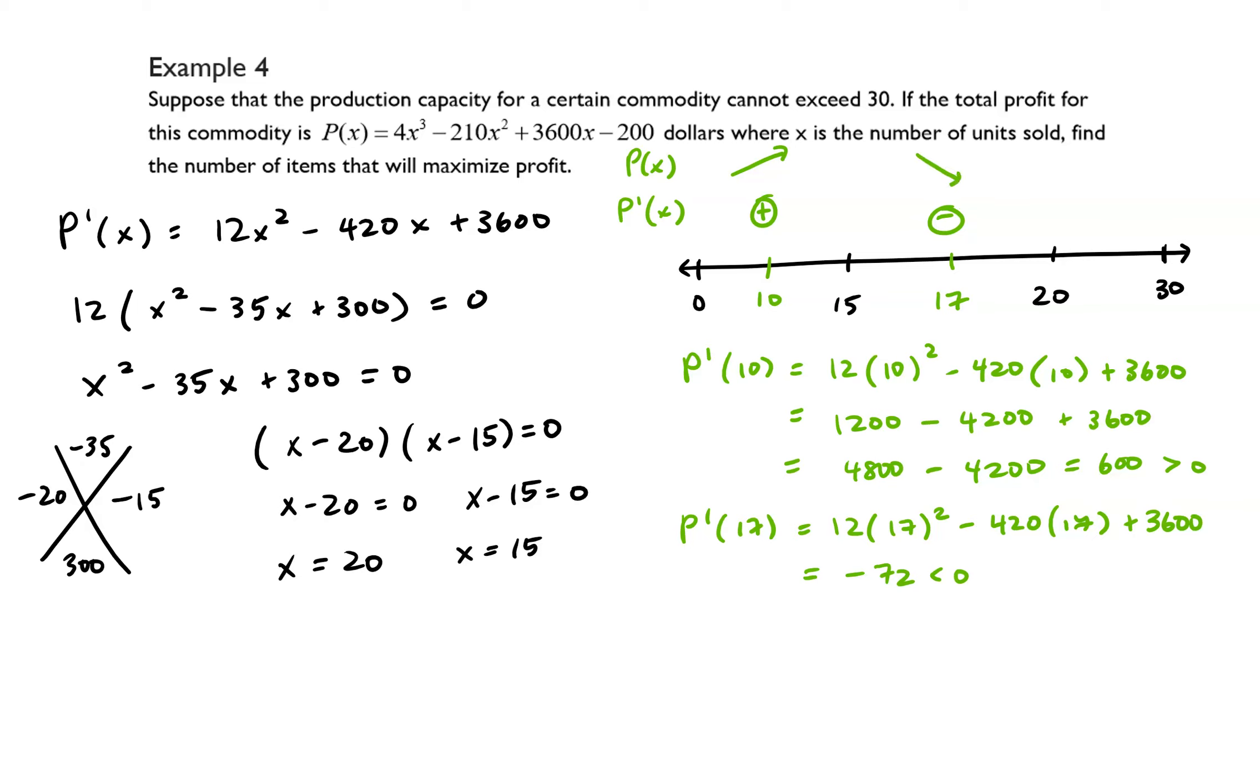So here this is negative and that means that we are going to be decreasing in the interval 15 to 20, and then after 20, maybe let's do 25. So p prime of 25 is equal to 600 which is greater than zero, so it's increasing again.